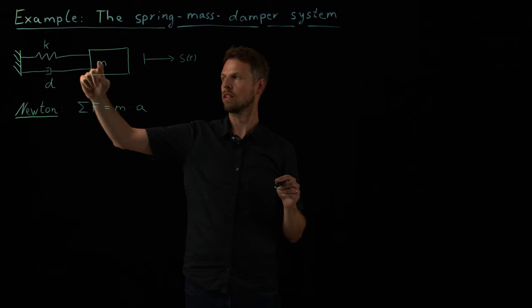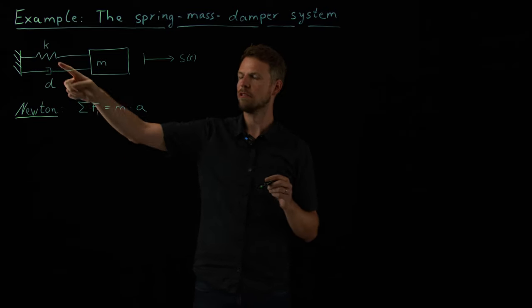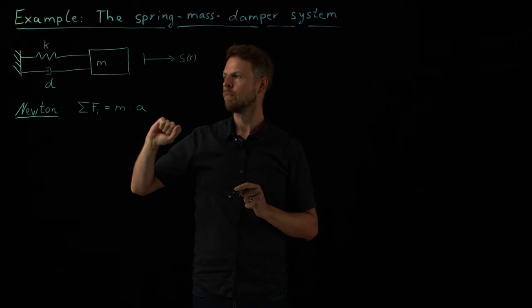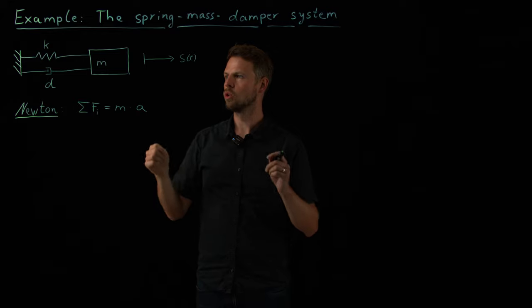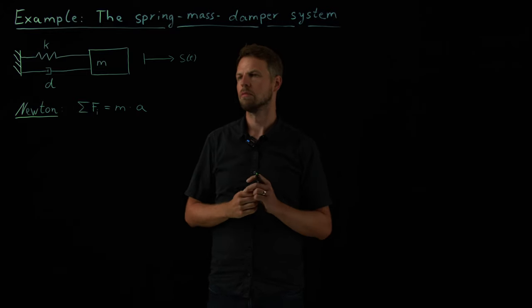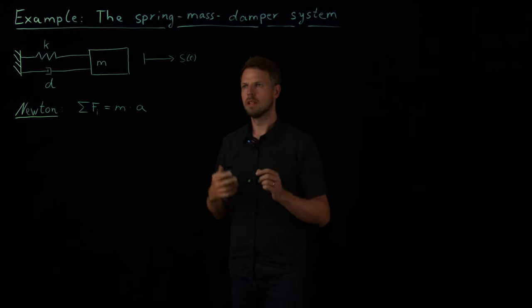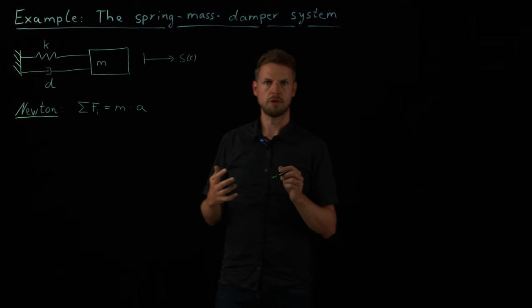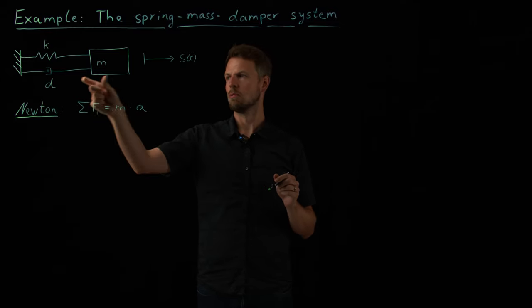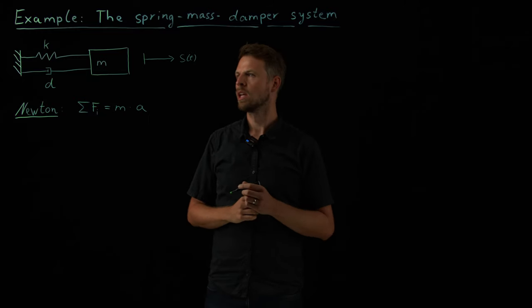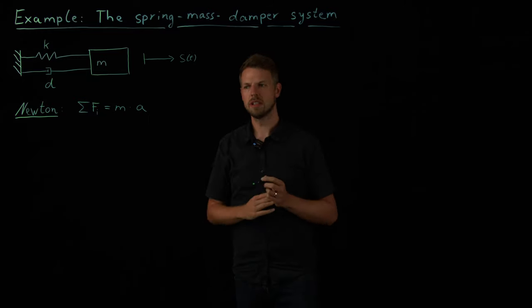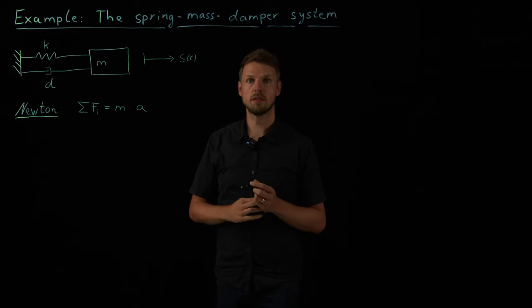And so the system I'm going to study is the so-called spring mass damper system. And it's actually quite easy. We have a mass here, and it's connected to a fixed wall with a spring that has a stiffness coefficient k and to a damper d that, when it's in motion, dampens the movement. And so the only degree of freedom we have for now is the position of this mass. It can move left and right. We are not considering vertical movements here. So this horizontal coordinate s of t is the state of the system we are interested in.